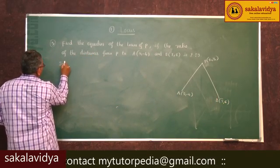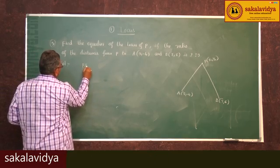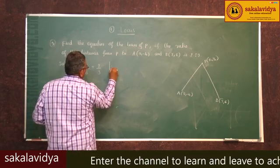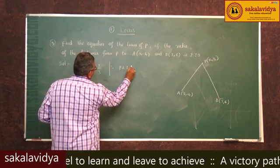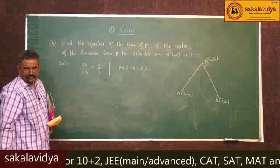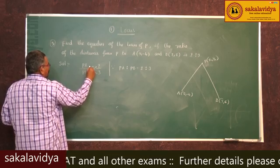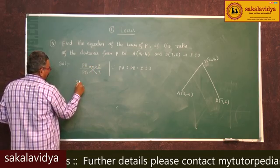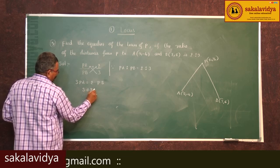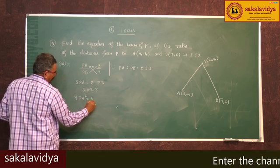As per the given geometrical condition, PA/PB = 2/3. Since PA:PB = 2:3, we can write PA/PB = 2/3. Cross-multiplying, we get 3PA = 2PB. Squaring on both sides, we get 9PA² = 4PB².